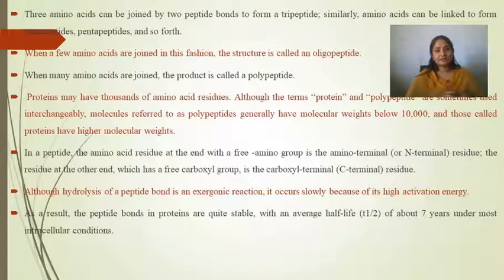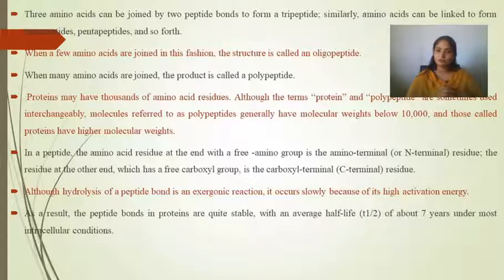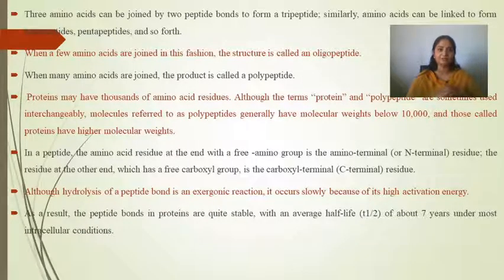Three amino acids joined by two peptide bonds form a tripeptide. Similarly, amino acids can be linked to form tetrapeptides, pentapeptides, and so forth. In a tripeptide there are two peptide bonds; in a pentapeptide there are four peptide bonds. When a few amino acids are joined in this fashion, the structure is called an oligopeptide.